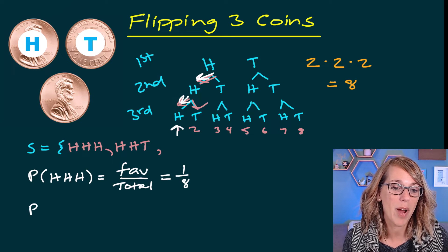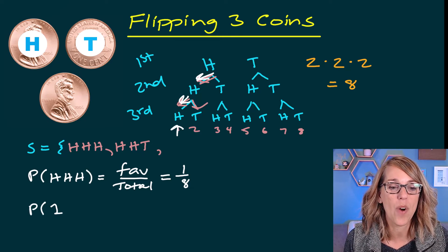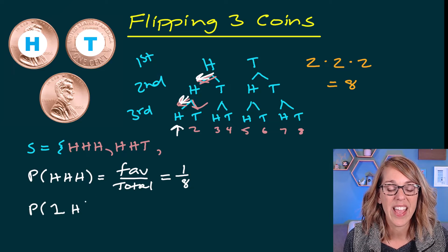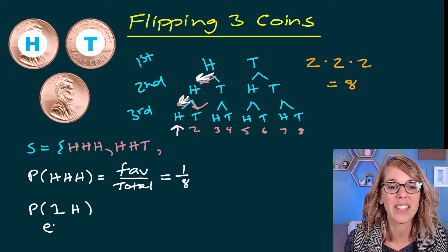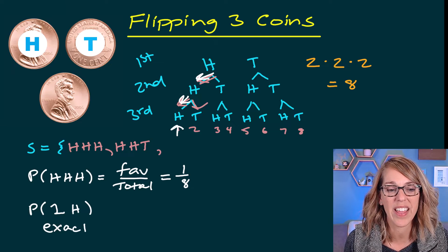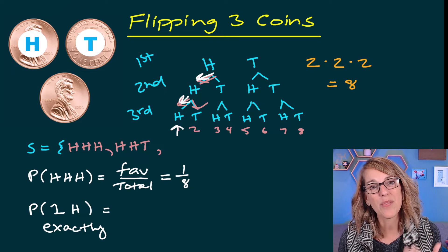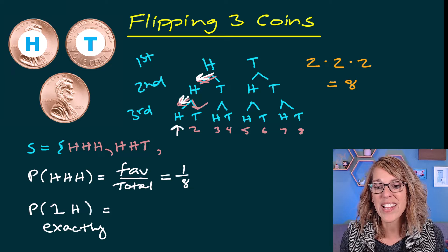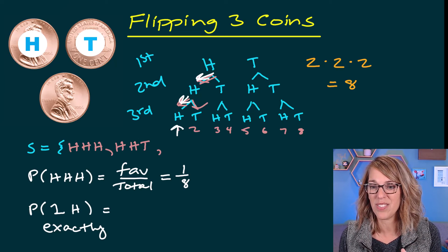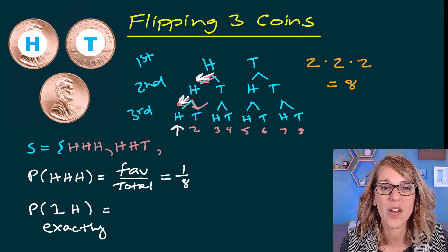Next, let's do the probability of getting one head. And when I say one head, let's do exactly one head. So I'm going to run through and I'm going to find the branches that give me that. Let's use an orange branching.